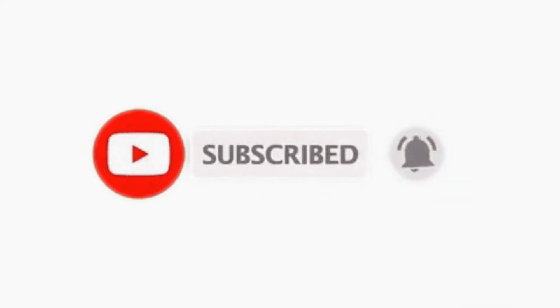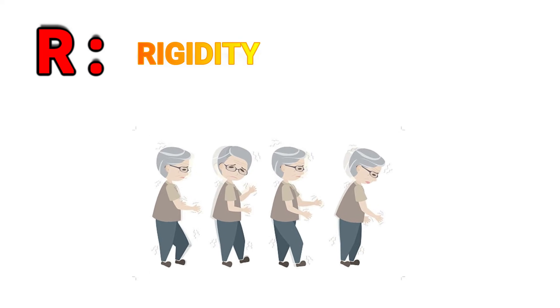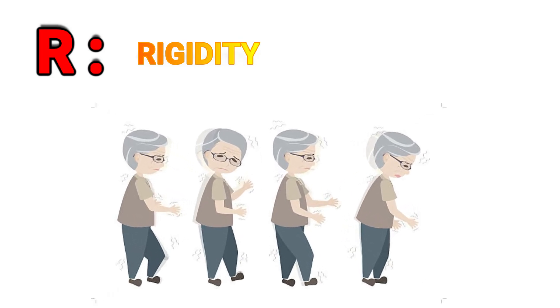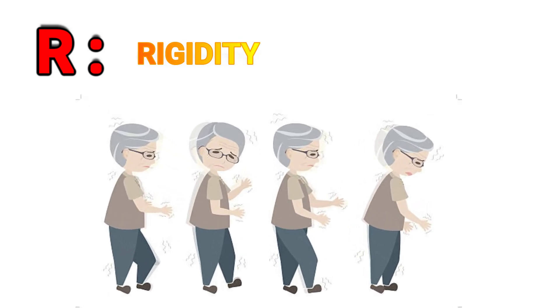R is for rigidity — stiffness of the arms or legs beyond what would result from normal aging or arthritis is called rigidity, and it is a hallmark feature of Parkinson's disease.